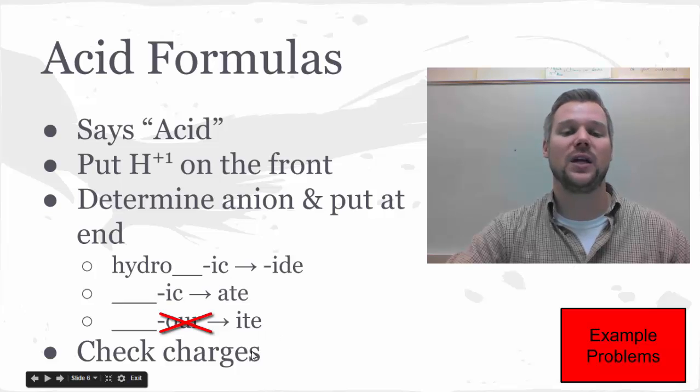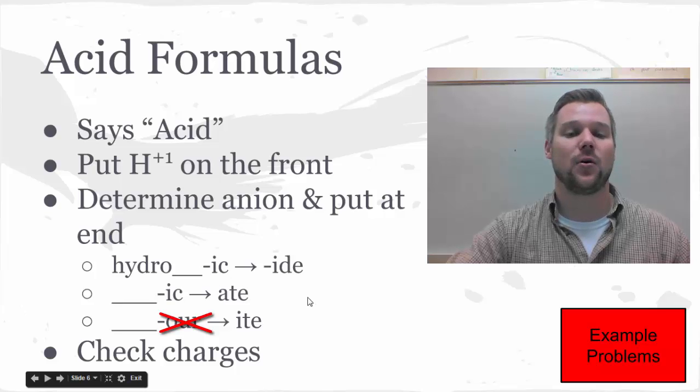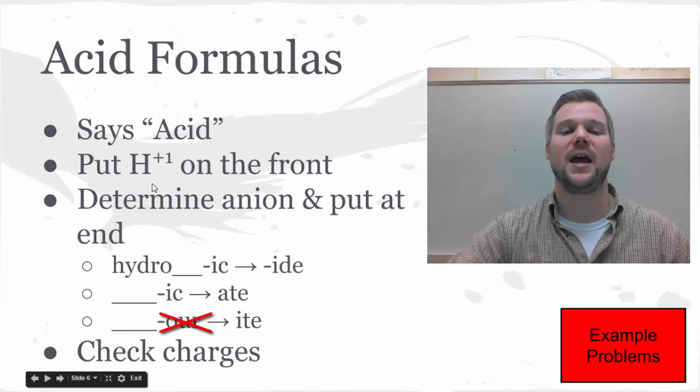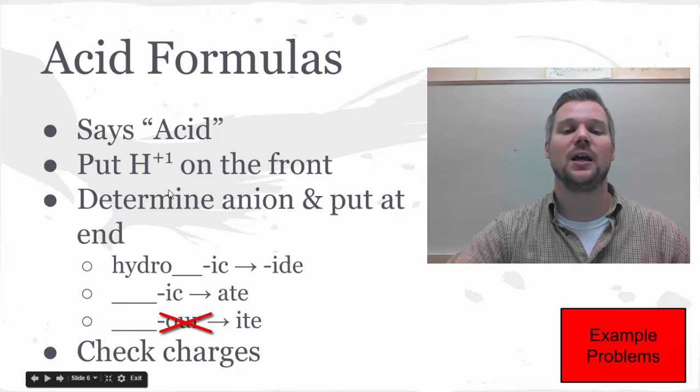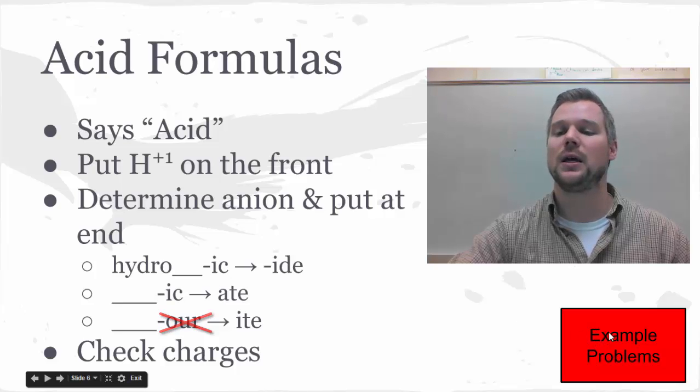For acids, you would only ever have a subscript on the hydrogen because the plus one would go on the back side of your anion. Since it's a one, you'll never have to write that. So you may have a subscript on the hydrogen if your anion happens to be a minus two or a minus three. Don't forget to check your charges.